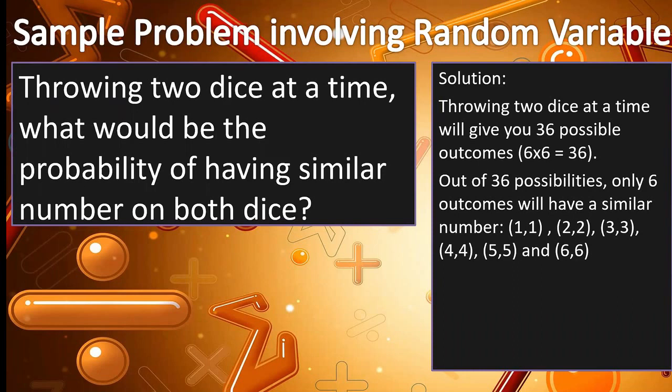And out of 36 possible outcomes, only 6 will have similar numbers. So, we will have 6 out of 36. It's equivalent to 1/6, or 1 out of 6.